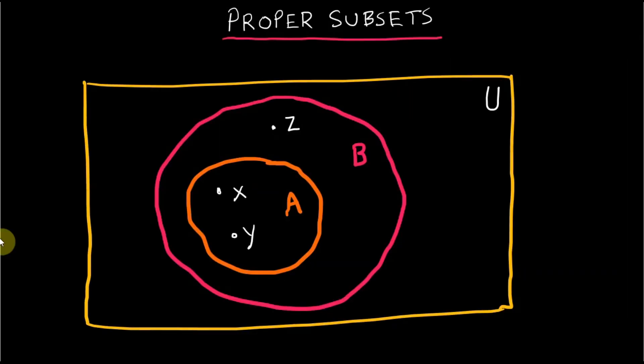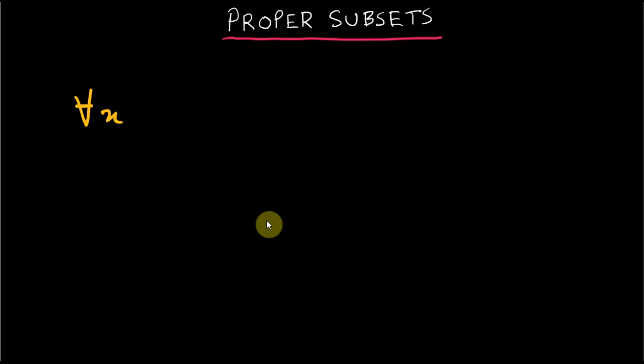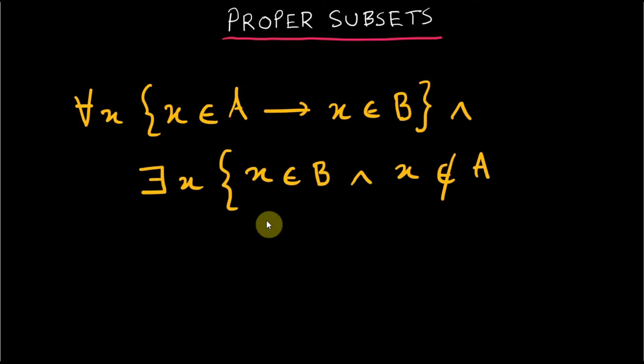Now we talk about proper subsets. A is proper subset of B such that all elements of A are in B but some elements of B are not in A. It can be written in logical form as for all x, x in A implies that x in B and for some x, x in B and x not in A.